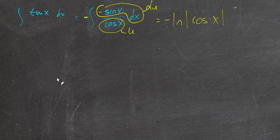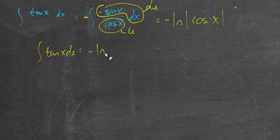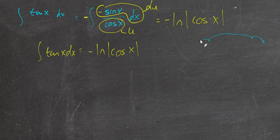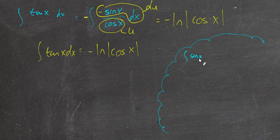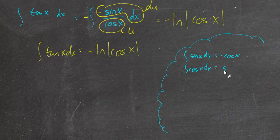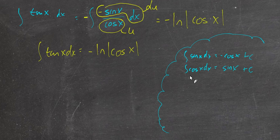So now the anti-derivative of tangent is equal to negative the anti-derivative of that expression, written in the form du over u, which means this equals the negative of the natural log of the absolute value of cosine. So the anti-derivative of tangent of x dx is equal to negative natural log of the absolute value of cosine x.